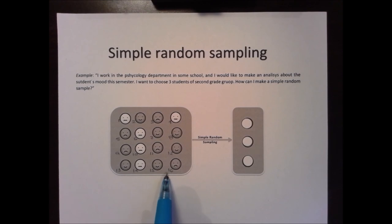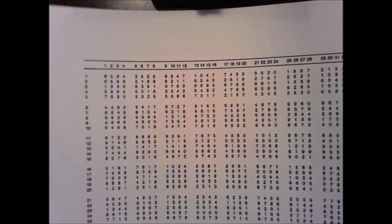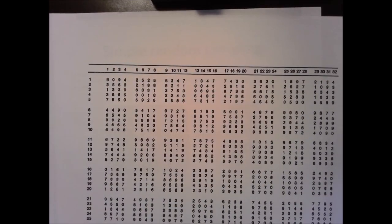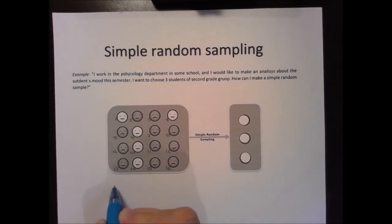This is very important. Why? Because I'm going to use a table called the random sampling numbers table. As you can see, we have numbers considered random or aleatory numbers. In a random way, I'm going to choose one row and one column. In the rows we have from 1 to 30, so I'm going to select row 8. For columns, we have from 1 to 32, so let's choose column 10.